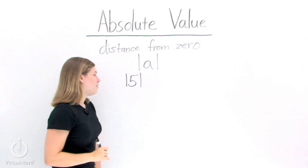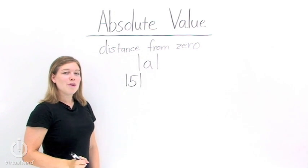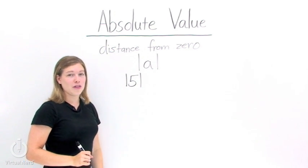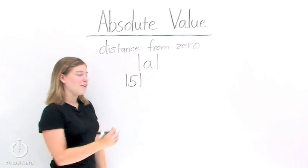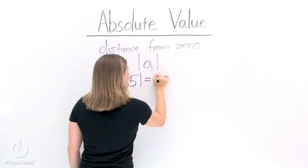The absolute value of 5. To find this, we want to find out how far away 5 is from 0 on the number line. 5, so the absolute value of 5 is 5.